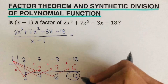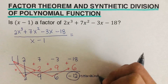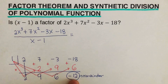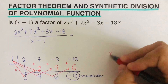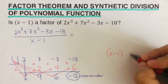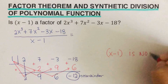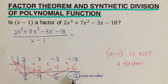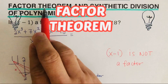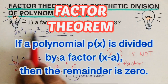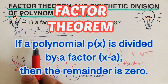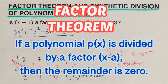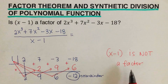Since the remainder is not zero, we can say that x minus 1 is not a factor. The Factor Theorem states that if a polynomial p(x) is divided by x minus a then the remainder must be zero. In this case it's not zero, so x minus 1 is not a factor.